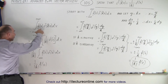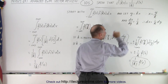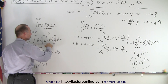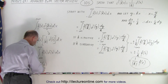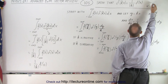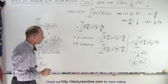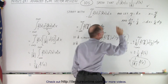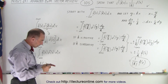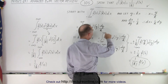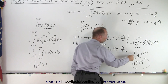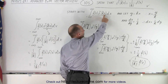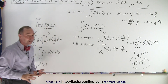We got the exact same result from both approaches. When we made the substitution and when we replaced delta(kx) with 1 over |k| times delta(x), we got identical results. This proves that the identity is indeed correct — if we have a Dirac delta function with a constant multiplied by x, that equals 1 over the absolute value of that constant times the Dirac delta function. Whenever we use the Dirac delta function with a constant, we simply get 1 over |k| times the function evaluated at zero, or at any other point depending on the argument.